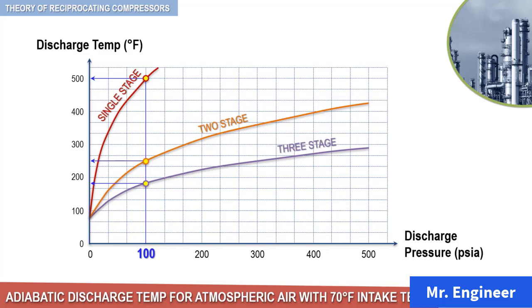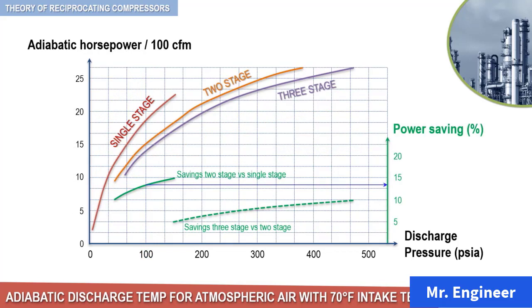The next figure shows the effect of multi-staging on power requirements. Here again, power savings are obvious. Let's consider once again that the discharge pressure is 100 PSI, and compare the power saving from a single stage to a double-stage compressor. As you can see here, the horsepower decreased from roughly 17 to 15 horsepower per 100 cubic feet per minute.